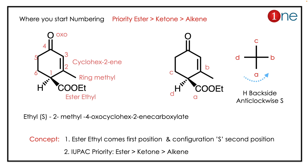Stereochemistry is also present, so we will write it separately and find the configuration. The highest priority goes to ester, then methyl because it is attached with the double bond, then C which is just a methylene group, and D is hydrogen. Analyzing the configuration, it is anti-clockwise, so the configuration is S. The name will be: ethyl (S)-2-methyl-4-oxocyclohex-2-ene-1-carboxylate.